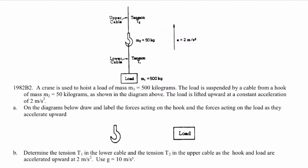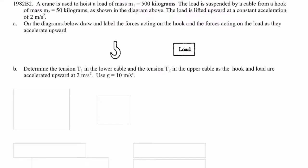On the diagrams below, draw and label the forces acting on the hook and the forces acting on the load as they accelerate upwards. So the hook has two forces acting on it from just the tensions. We've got tension 2 pulling the hook upwards, and tension 1 is going to be acting downwards on the hook. The hook also has a mass of 50 kilograms, so there's going to be a force of gravity associated as well.